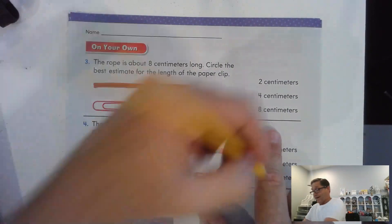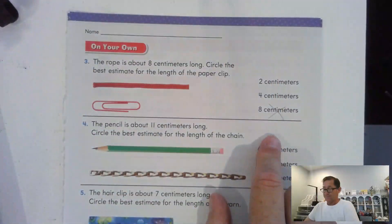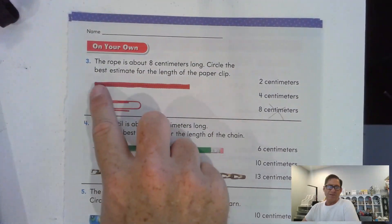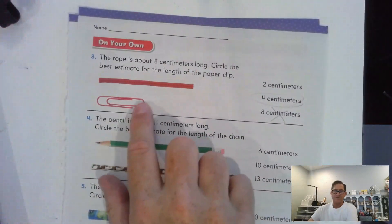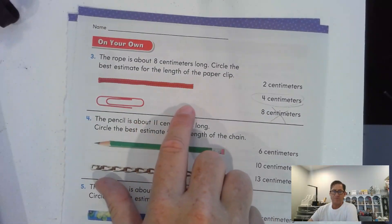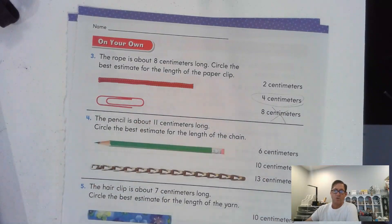So, it's definitely not 8, right? And again, 2 really is too small. 1, 2 maybe. I've got to go with 4. Because it does look like if I put another paperclip here, it would be about as long as the rope.